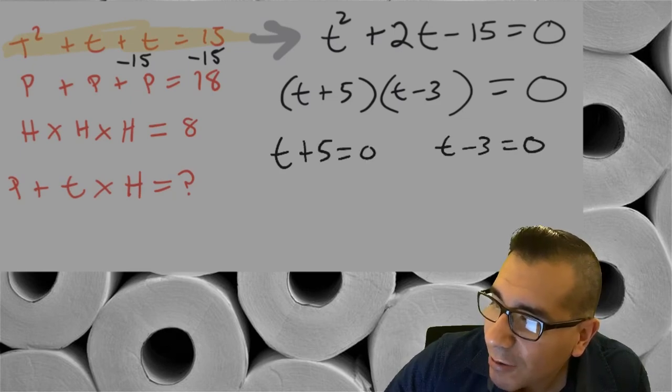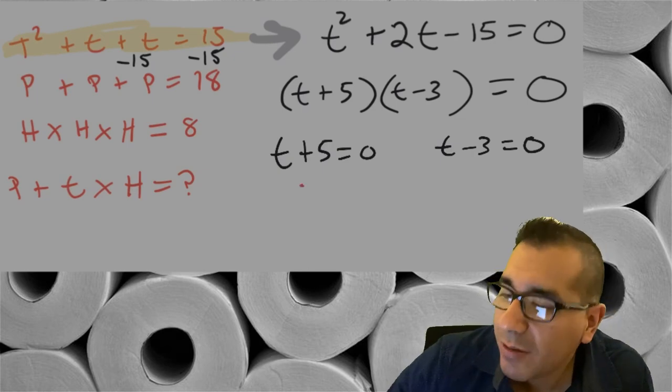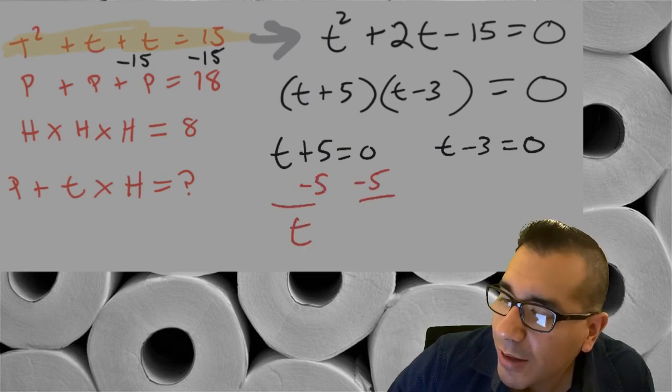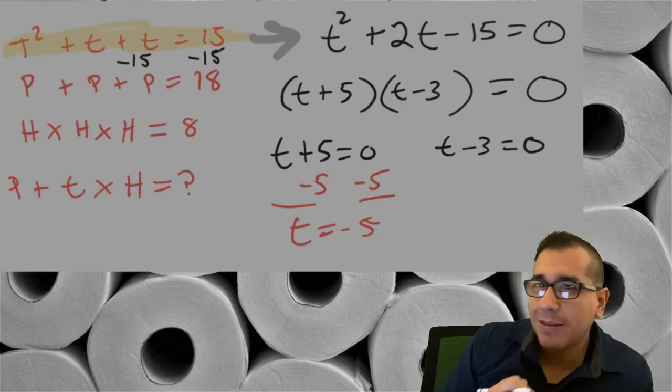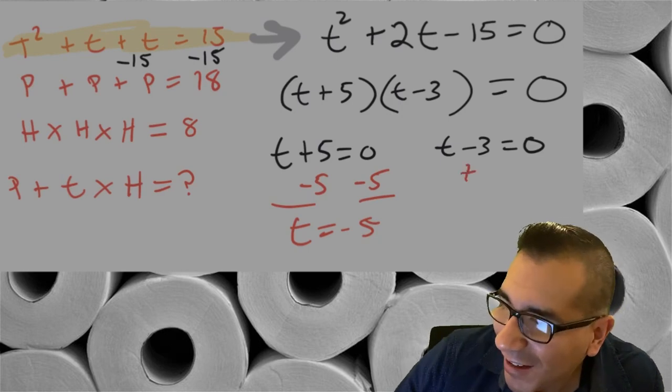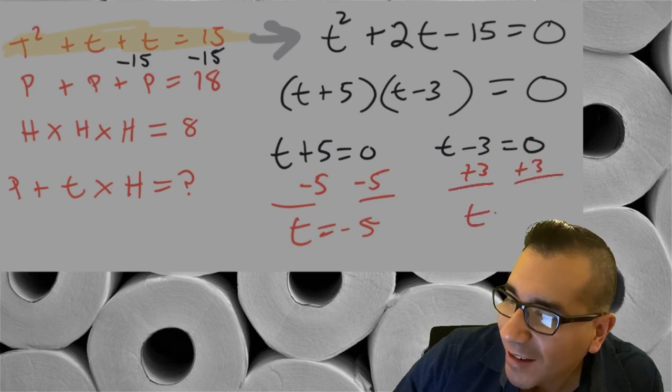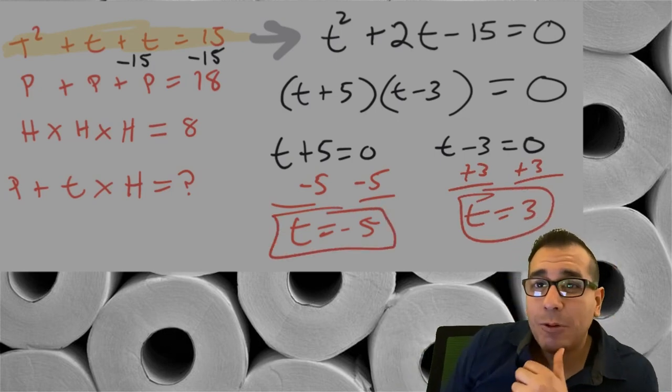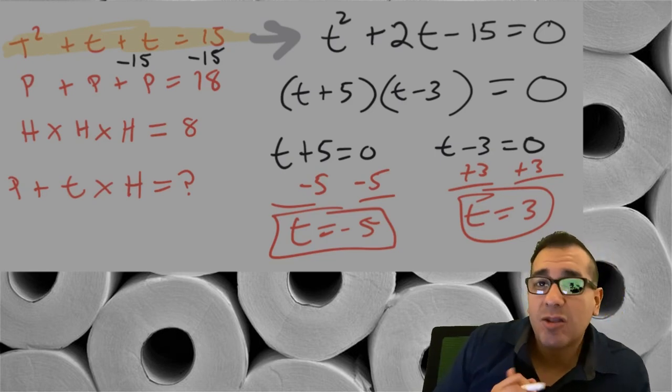And now you can solve each one. I'm bringing some of you back to the day - where were you, what were you doing in your math class? I'm interested, how was your math experience? And then over here we're gonna add three, add three, and you get T equals three. So these were our two possible values for the toilet paper rolls. Alright, and that's how we solve it algebraically.